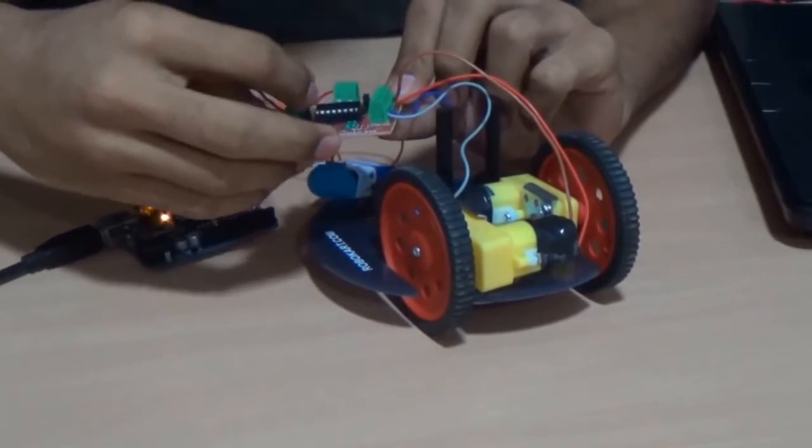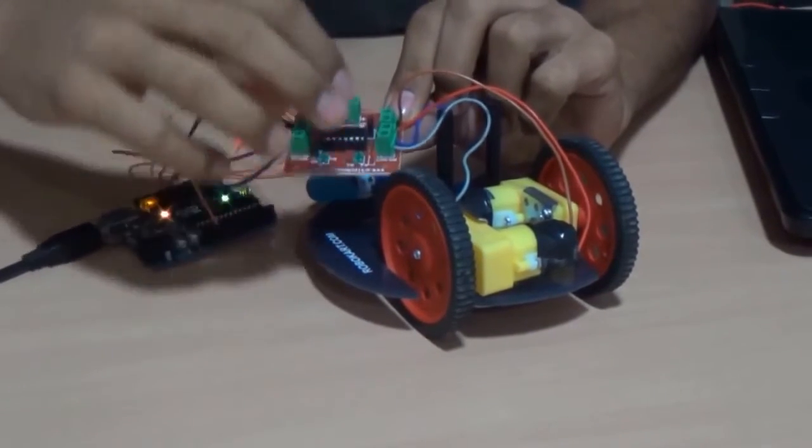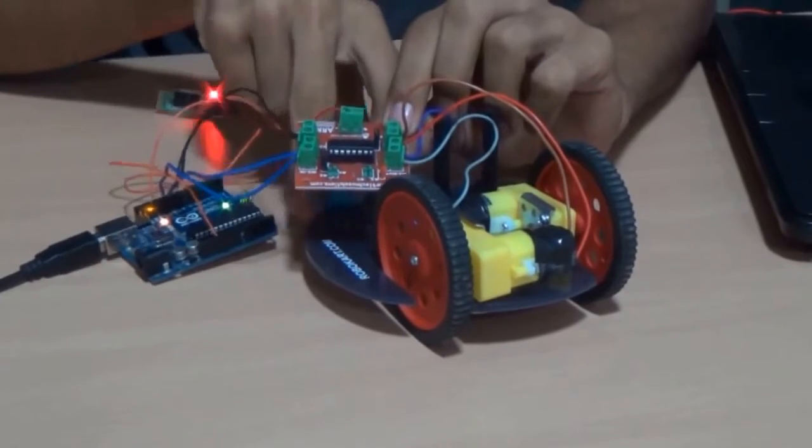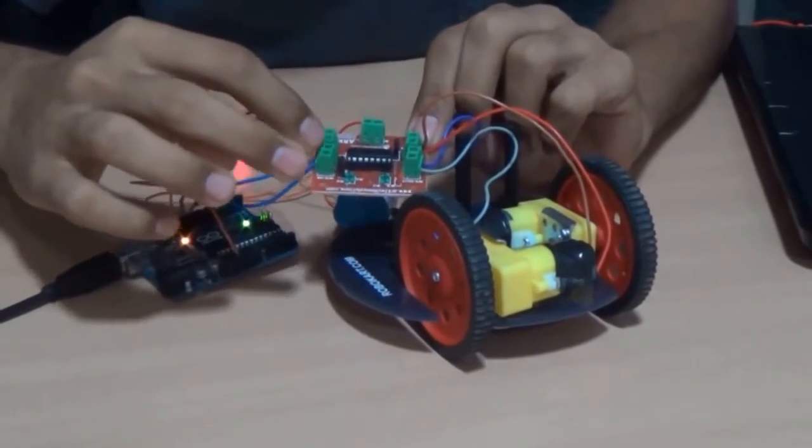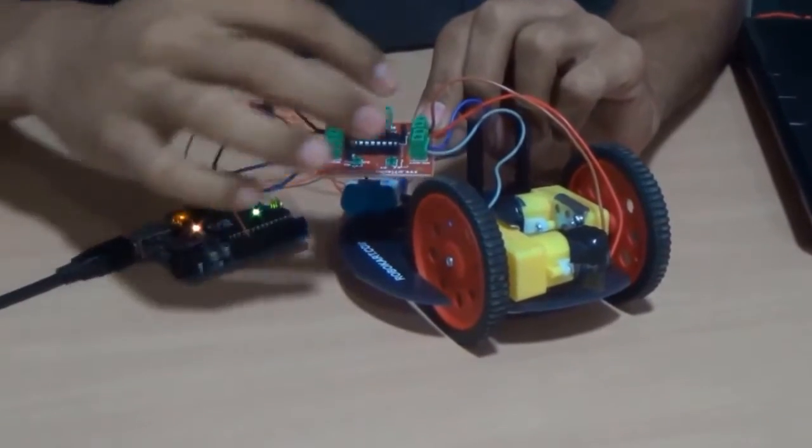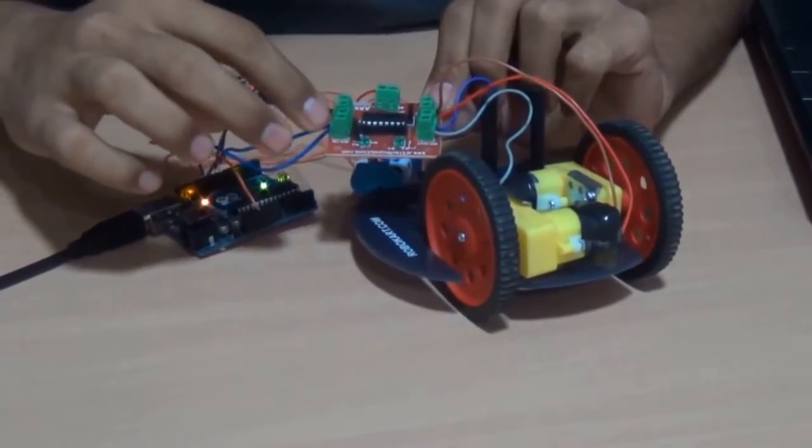It has 16 pins on each side and for this it's supply voltage is 9 volt or something. And this is input that is taken from Arduino and this is output given to motors.